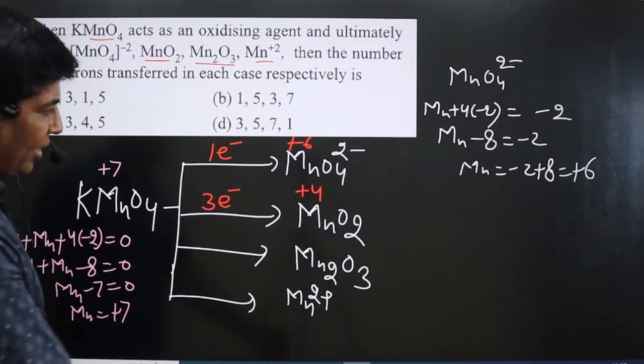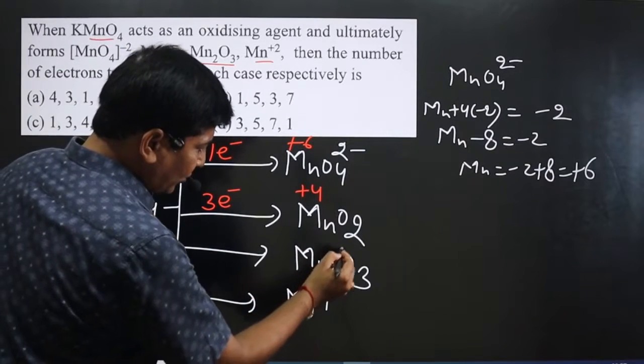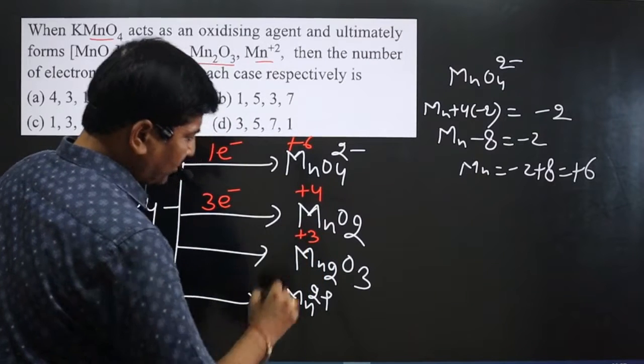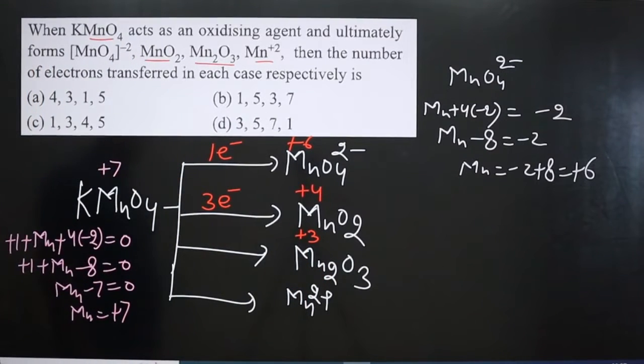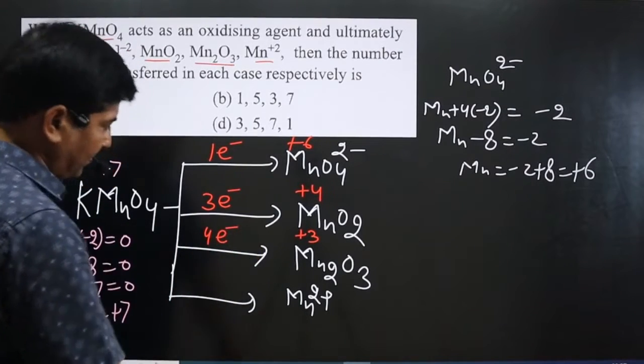Difference in oxidation numbers - you can crisscross, 3 will go this side, 2 will go this side. So Mn is present in +3 oxidation number. So 7 - 3, 4 electron transfer is there.